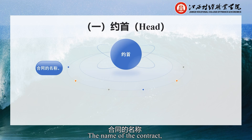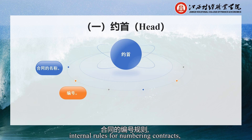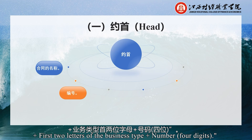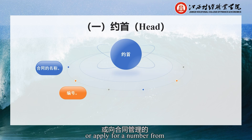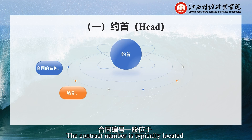The name of the contract indicates its form and is typically located in the center of the first line of the contract. Regarding numbering, many foreign trade companies have established internal rules for numbering contracts — for example, the first letter of the company name, plus year four digits, plus the first two letters of the business type, plus a four-digit number. The contract number is typically located in the upper right corner of the contract.